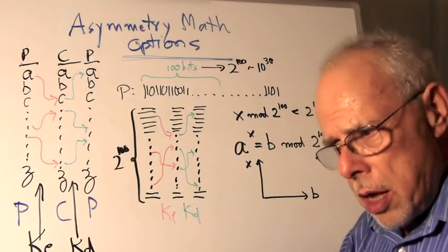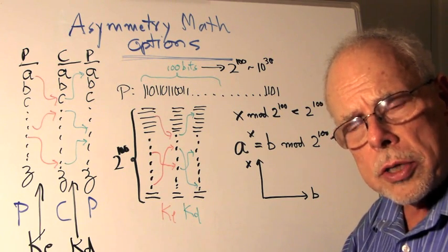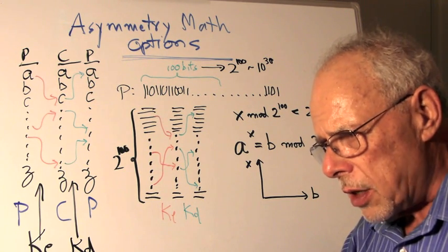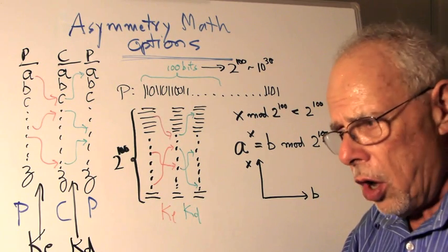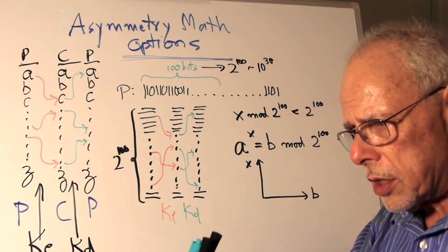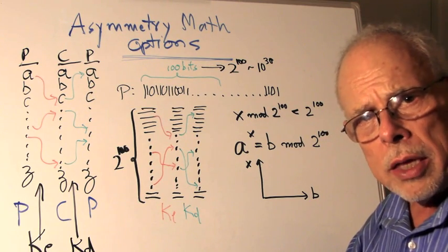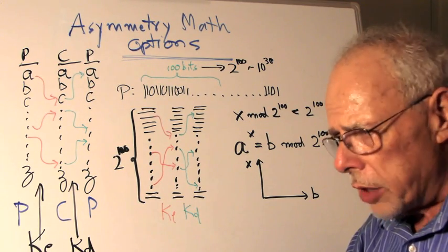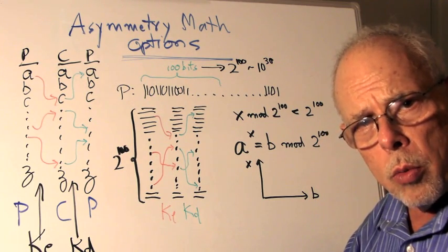Asymmetry. Some mathematical options. We ask ourselves, how do we handle the task, the challenge, of creating two keys, encryption and decryption, so that it will be difficult to derive one from the other. And here is one option how we do so.